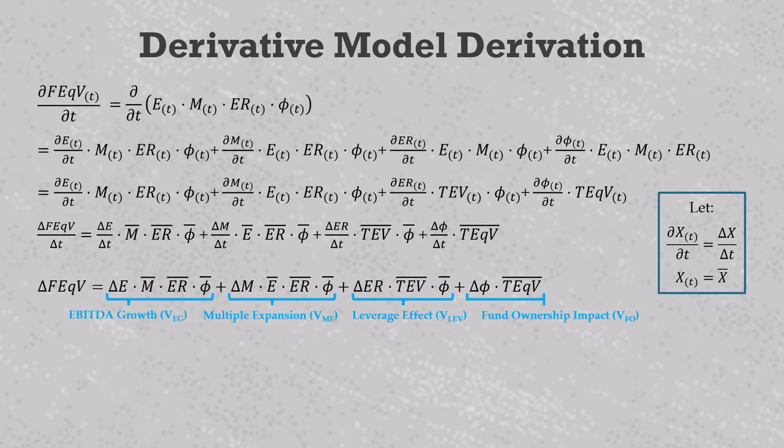Now it's no accident that starting with four value creation variables gave us four value drivers. We would have derived five value drivers if we started with the expression that had revenue and EBITDA margin instead of EBITDA. In this case, the EBITDA growth term would have been replaced with two others, a revenue growth term that had delta R and average epsilon M instead of delta E, and an EBITDA margin expression that had delta epsilon M and average R instead of delta E. So you see that the value creation formulas tend to be symmetrical like that, just like EBITDA growth is delta E times M, and multiple expansion is delta M times E.